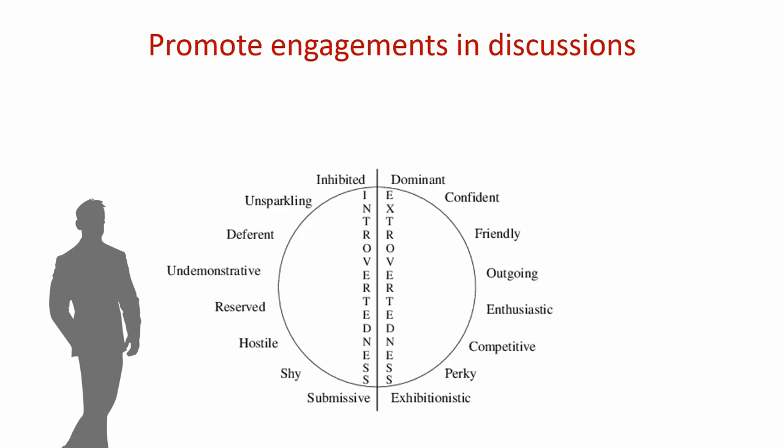Based on his framework, which to him seems appropriate, Jim is now looking for four legs, a tail, and a face with ears. He interprets Adam's silence as indicative of shy, reserved, and inhibited behaviors, and concludes that Adam must be an introvert.